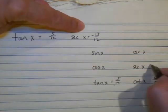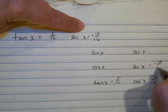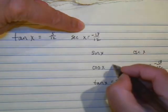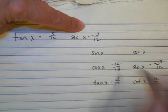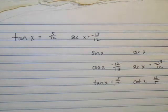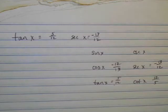I know secant, so I also know cosine. So the only ones that I have left is to find sine and cosecant. A lot of different ways you can do this. I'm going to draw a triangle.